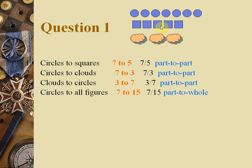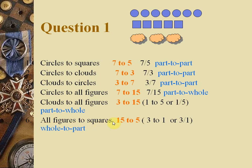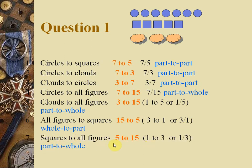Circles to all figures: there are 7 circles and 15 total figures (5 + 3 + 7), so the ratio is 7:15. Wait — circles to all figures is 3:15, which simplifies to 1:5. Clouds to all figures is also 1:5. All figures to squares: 15:5, which simplifies to 3:1. Squares to all figures: 5:15, which simplifies to 1:3.